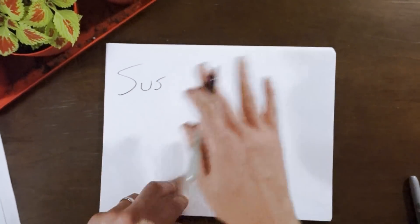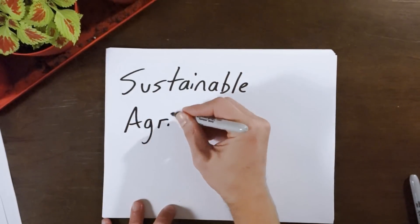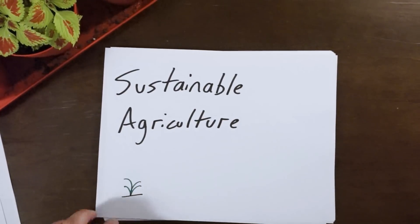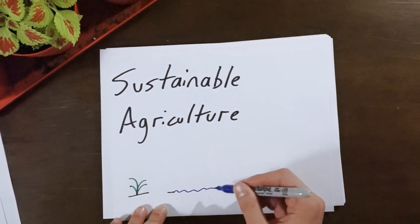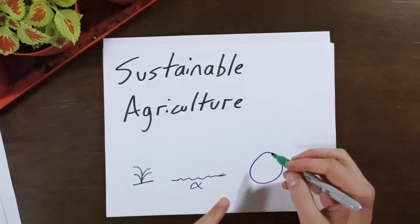You've probably heard of sustainable agriculture, which is the production of food, fiber, and other plant and animal products using farming techniques to help protect the environment. Things like preventing soil erosion and conserving water are great examples, but this drawing of the Earth is not a good example. Sorry.